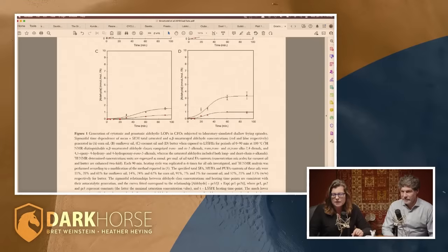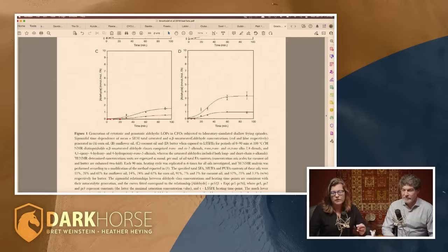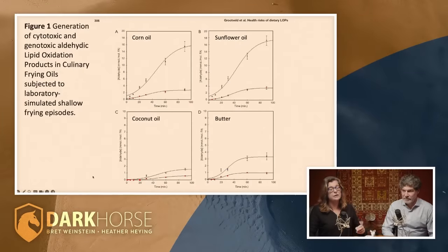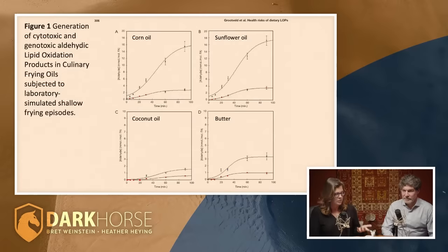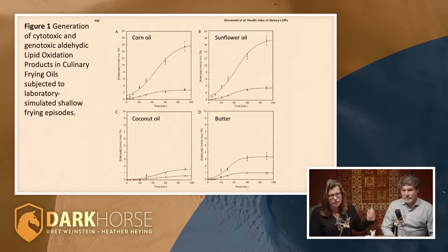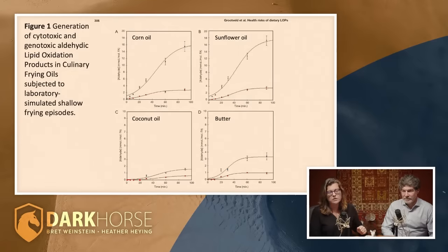The total saturated and alpha-beta unsaturated aldehyde concentrations — we're talking about toxic aldehydes that are being generated by the frying of these fats. Figure one's title is 'generation of cytotoxic and genotoxic' — that's cell-killing and gene-destroying — aldehyde lipid oxidation products. That's all the oxidation products generated in culinary frying oils: corn oil, sunflower oil, coconut oil, and butter were the four tested, subjected to laboratory-simulated shallow frying episodes.